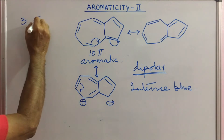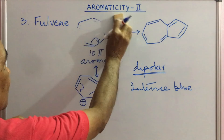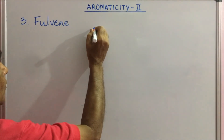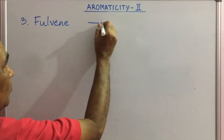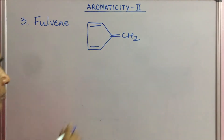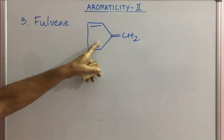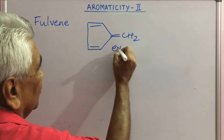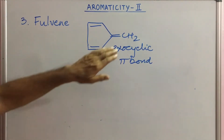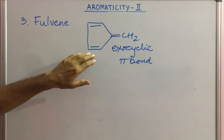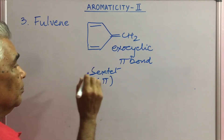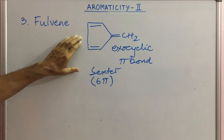Next is fulvene. It has 4 pi electrons in the ring and 2 from the exocyclic pi bond. This exocyclic pi bond takes part in delocalization, and hence we have a sextet — a 6 pi electron system — and fulvene is thus aromatic in nature.